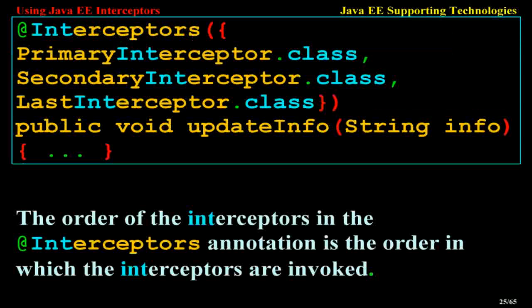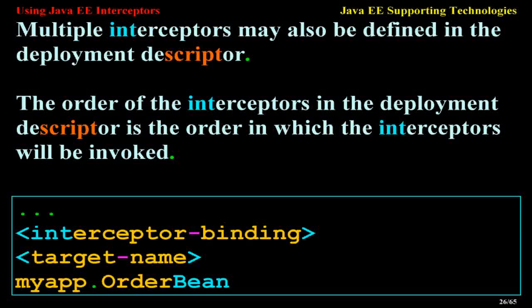Using Multiple Method Interceptors: use the Interceptors annotation to declare multiple interceptors for a target method or class, for example @Interceptors({PrimaryInterceptor.class, SecondaryInterceptor.class, LastInterceptor.class}) on public void updateInfo(String info). The order of the interceptors in the Interceptors annotation is the order in which the interceptors are invoked. Multiple interceptors may also be defined in the deployment descriptor, and their order in the descriptor determines invocation order.